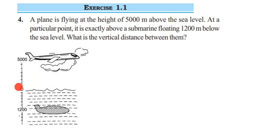On top of the sea level, numbers will be positive, so the plane flying at a height of 5000 meters — this 5000 will be positive. They have also given that there is a submarine floating 1200 meters below the sea level. It is below zero, which means below the sea level.